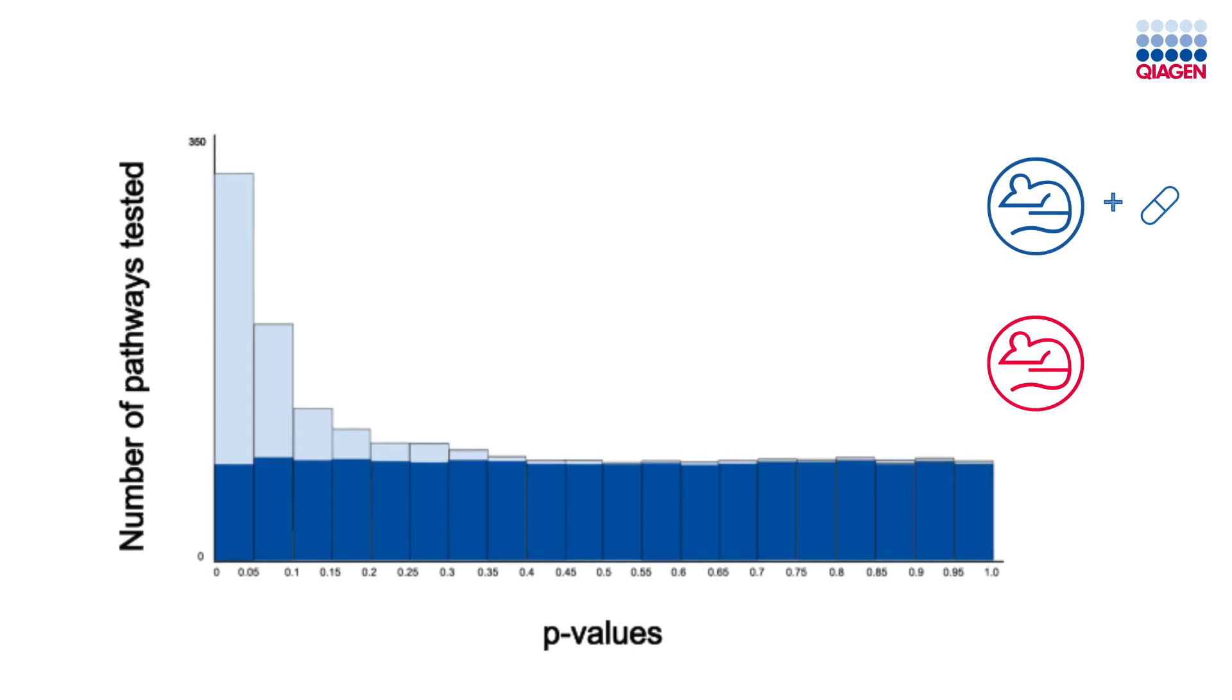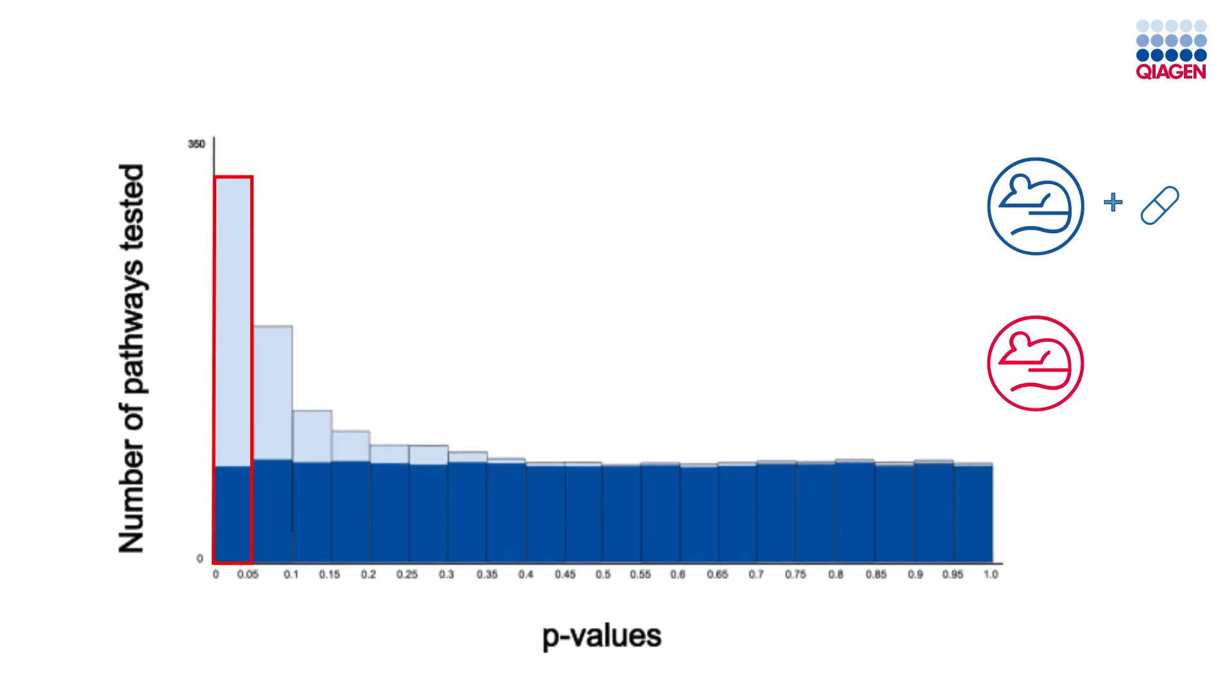As before, the majority of the uniformly distributed p-values comes from the pathways unaffected by the drug. The p-values in the leftmost bar are those that pass our alpha of 0.05, and therefore are our discoveries. However, because we combined all pathway results into one histogram, our discoveries are a mixture of pathways affected and unaffected by the drug. So out of this set of discoveries, how many are true positives, and how many are false positives? We can estimate the proportion of false positives in this set of discoveries and separate out the p-values where the null hypothesis can be rejected and those where the null hypothesis cannot be rejected. To do this, we can first draw a line across the flat portion of the histogram, where the p-values are uniformly distributed. These are the p-values from pathways where the null hypothesis cannot be rejected. In other words, these are the truly non-significant results.